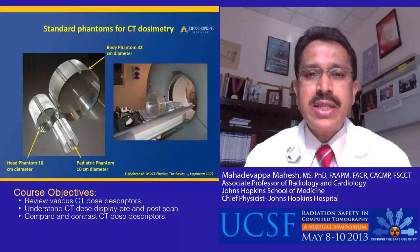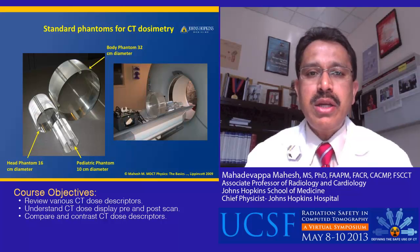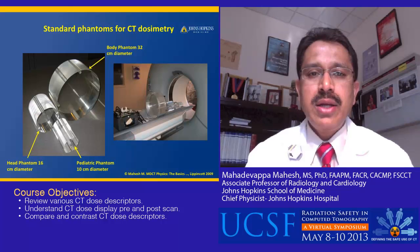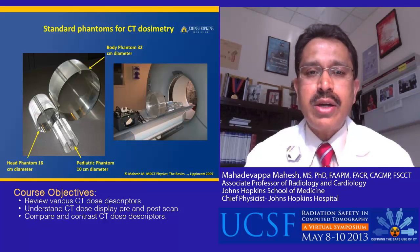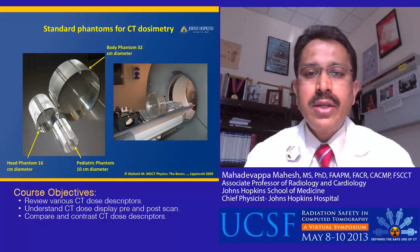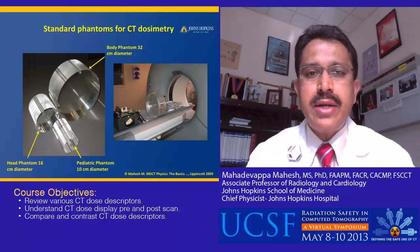Shown here are the standard CT phantoms used for CT dose measurement. The larger phantom, called the body phantom, is a 32-centimeter lucite cylinder with holes drilled in it, which are used to place the ion chamber — typically a 100-millimeter length chamber — inside during measurement. The second phantom is the 16-centimeter diameter head phantom. These two phantoms are historically used as the standardized CT phantoms for a lot of the measurements which are now available on CT scanners.